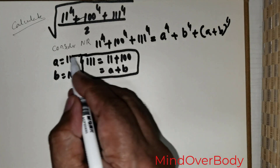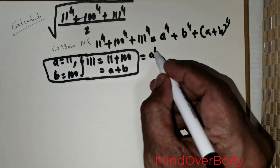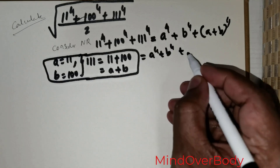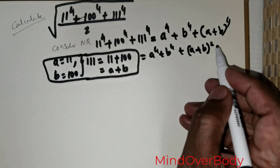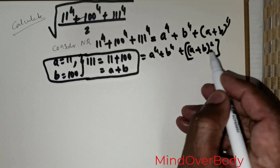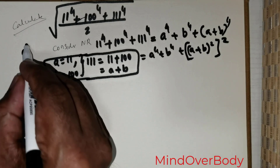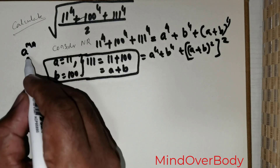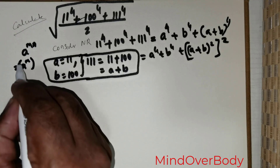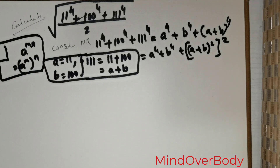Now I have a quantity (A positive B) raised to the power 4. I can rewrite that as (A positive B) raised to the power 2, with the entire component raised to the power 2. From the law of indices, I can rewrite A raised to the power M times N as A raised to the power M, raised to the power N. This is always possible, and that is exactly what I am doing here.